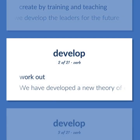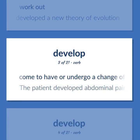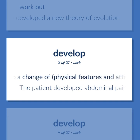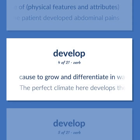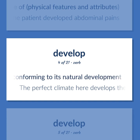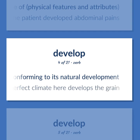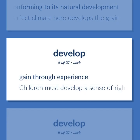Develop: Work out — we have developed a new theory of evolution. Come to have or undergo a change of physical features and attributes — the patient developed abdominal pains. Cause to grow and differentiate in ways conforming to its natural development — the perfect climate here develops the grain. Gain through experience — children must develop a sense of right and wrong.